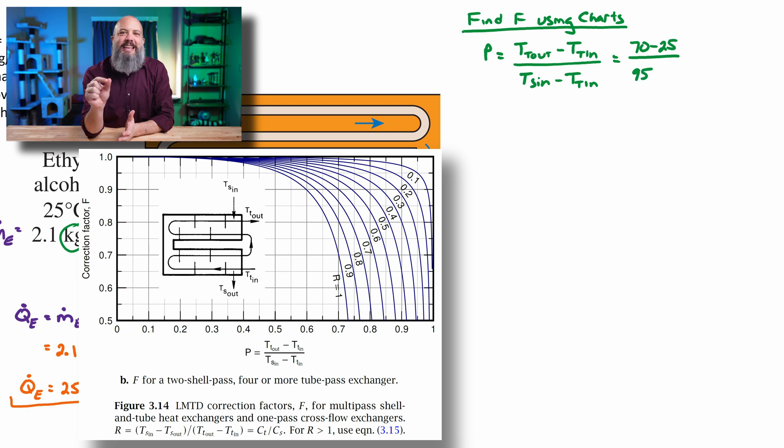This T flow is for the tube flow, right? And S is for the shell flow. This comes out to a value of 0.64.